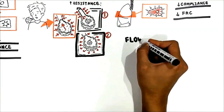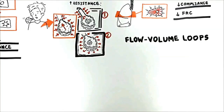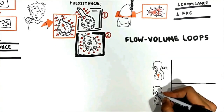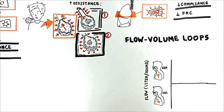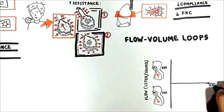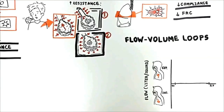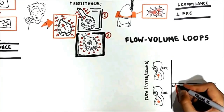Now let's talk about the flow-volume loop. The instantaneous relationship between flow and lung volume during a maximal expiration from total lung capacity is useful in determining whether obstructive or restrictive lung disease is present. On the upper part of the loop we have expiration and on the lower, inspiration. The y-axis is flow in liters per second and the x-axis is lung volume, with residual volume on one end and total lung capacity on the other. Volume increases from right to left.